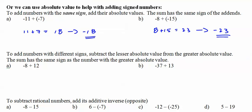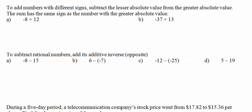If they have different signs, subtract. Which one's bigger? 12 minus 8 is 4. Positive is bigger. We're done. 37 minus 13 is 24. Negative is bigger. Done.